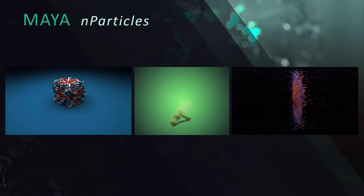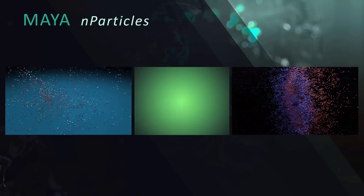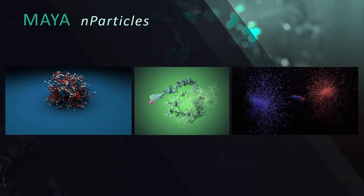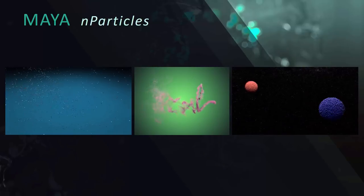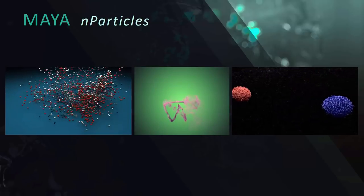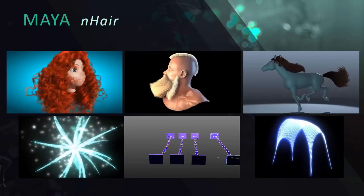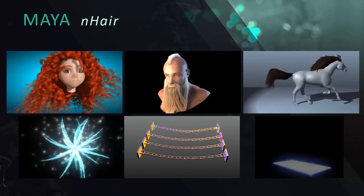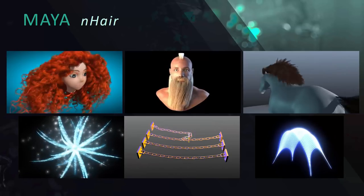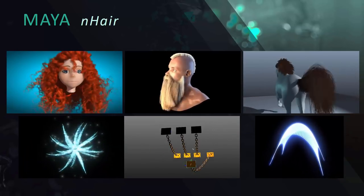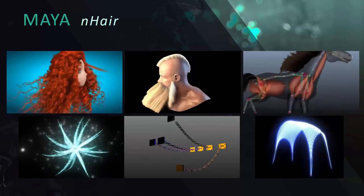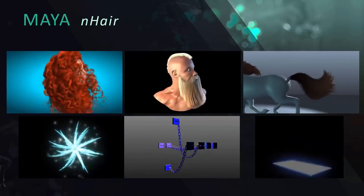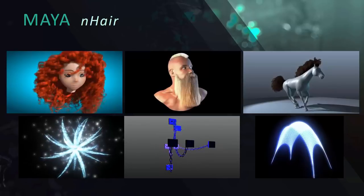nParticles can follow goals and collide with one another — you can see two nParticle objects colliding together to create a cool intersecting effect. nHair is primarily used for hair, so the most common cases are for the motion of hair on a character or creature, but it can also be used for more abstract effects: animating tentacles, antennas, chains. You can actually attach hairs to skeletal chains to create secondary animation for characters, or ropes, whips, and cables.